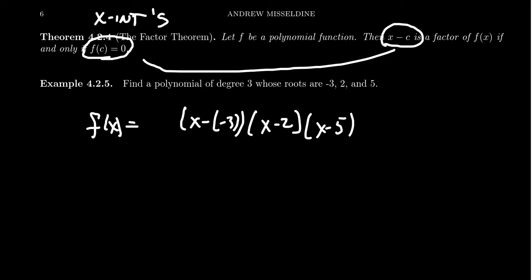Now, this doesn't uniquely determine f of x because we don't have enough information to determine the y-intercept, which corresponds to this leading coefficient a. We don't know what the leading coefficient is, but we do know what these x-intercepts are. And so I would probably write this thing as a times x plus 3 times x minus 2 times x minus 5.